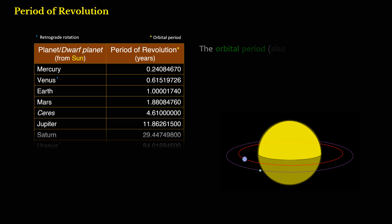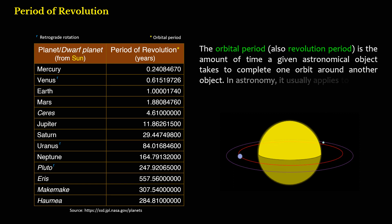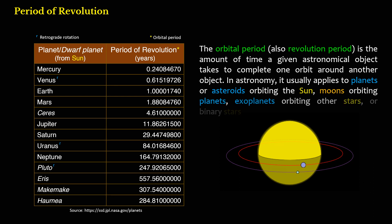The orbital period, also revolution period, is the amount of time a given astronomical object takes to complete one orbit around another object. In astronomy, it usually applies to planets or asteroids orbiting the sun, moons orbiting planets, exoplanets orbiting other stars, or binary stars.